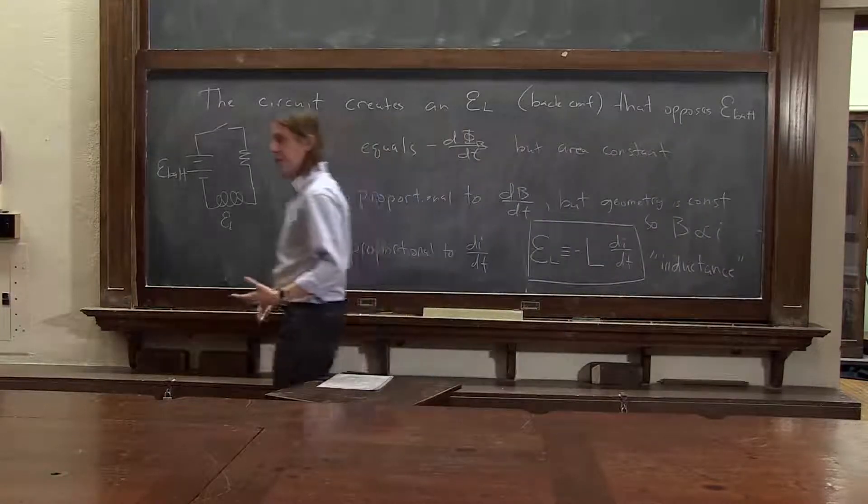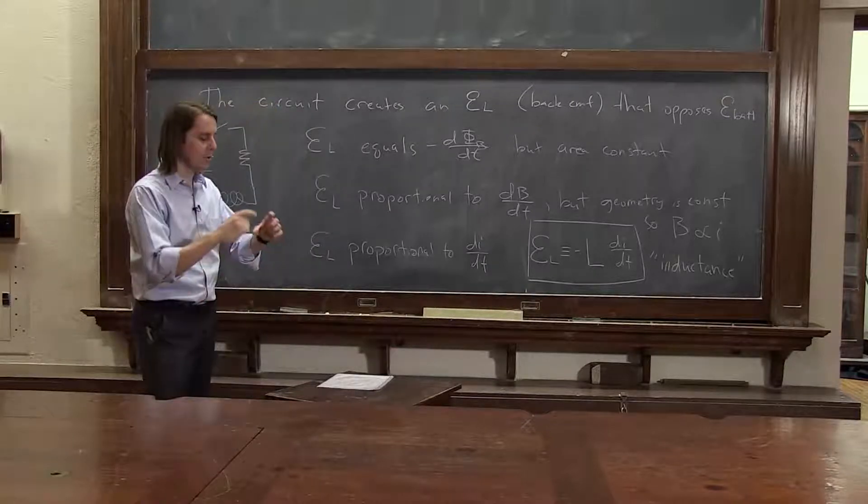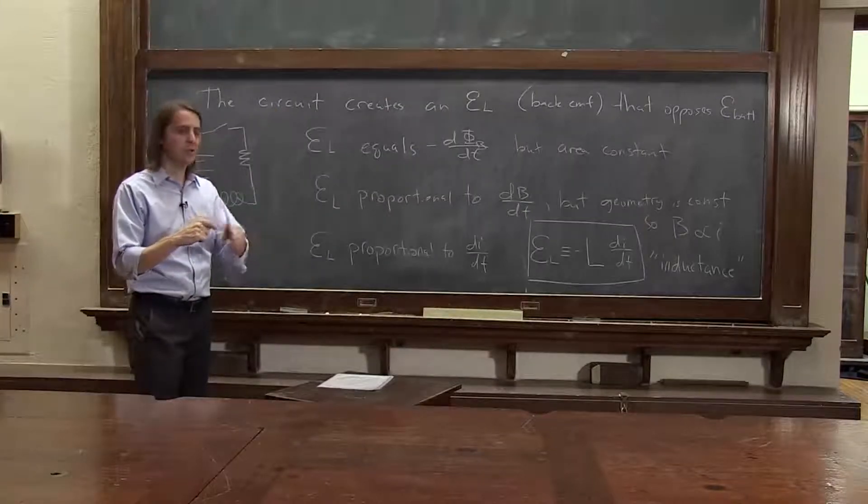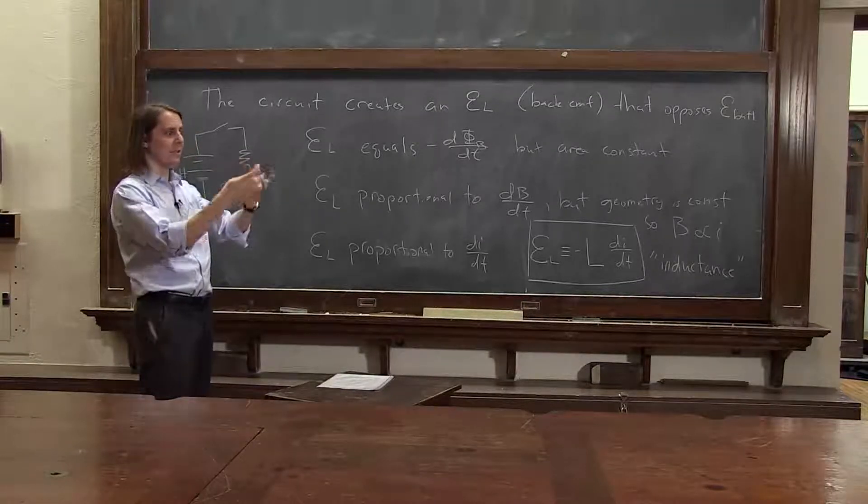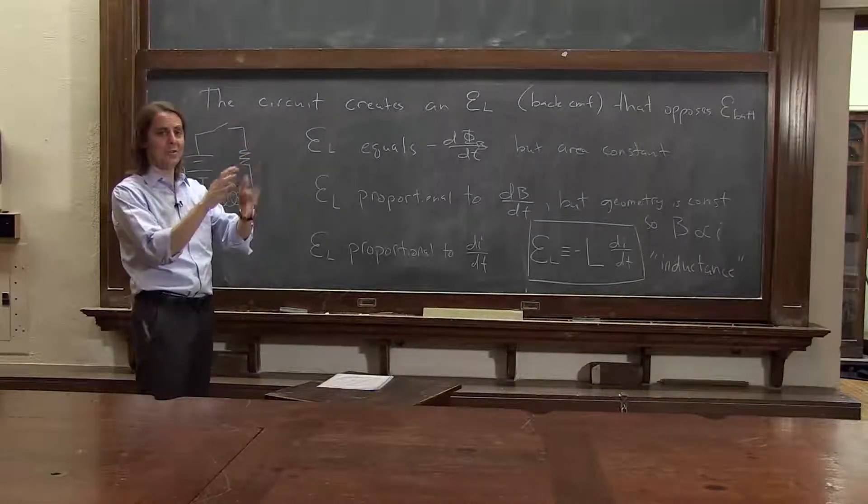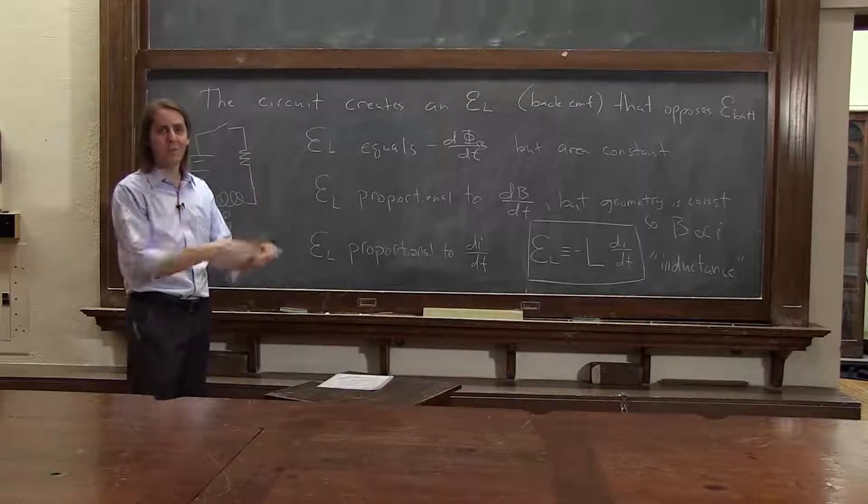So when you buy an inductor and put it in a circuit, they tell you what its inductance is. And there's two ways they could have figured out its inductance. They might have done a bunch of simulations of exactly what the field is doing, and all the materials and all this stuff, or more likely, they just measure it.